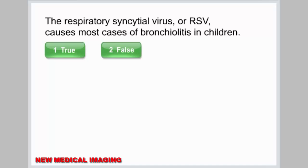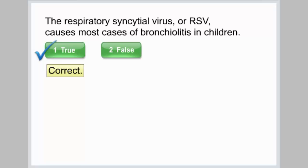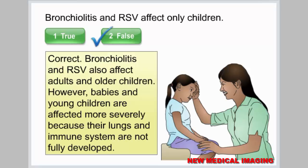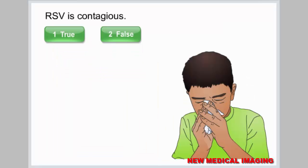The respiratory syncytial virus, or RSV, causes most cases of bronchiolitis in children — true or false. Correct. Bronchiolitis and RSV also affect adults and older children; however, babies and young children are affected more severely because their lungs and immune system are not fully developed. RSV is contagious — true or false. Correct.